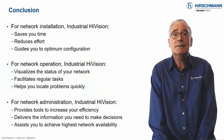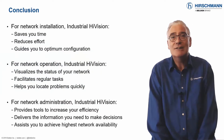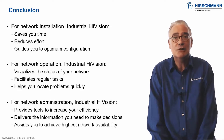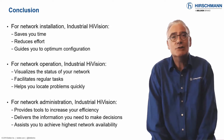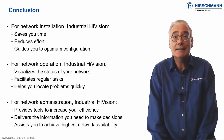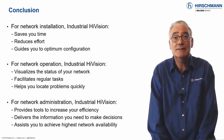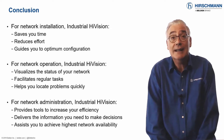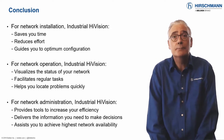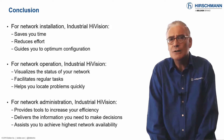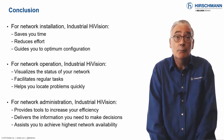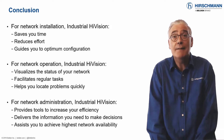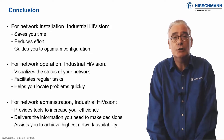In the past, network installation was as simple as just cabling some switches together. Today all that has changed. To guarantee highest availability, you must configure a large number of parameters, such as redundancy, VLANs, security, and event management. Industrial HiVision is not a substitute for expertise, but it can expedite the mundane tasks, leaving you to concentrate on the essential functionality.